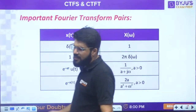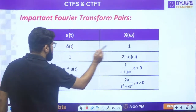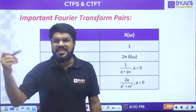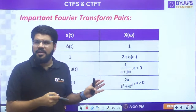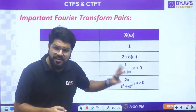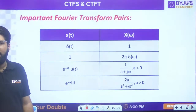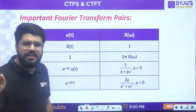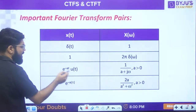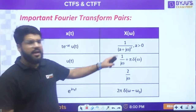Important Fourier transform pairs: δ(t) has FT = 1; constant 1 has FT = 2πδ(ω). e^(-at)u(t) for positive a has FT = 1/(a + jω). e^(-a|t|) has FT = 2a/(a² + ω²). t·e^(-at)u(t) is derived using the frequency differentiation property and has FT = 1/(a + jω)². u(t) has FT = 1/(jω) + πδ(ω). Signum t has FT = 2/(jω). e^(jω₀t) has FT = 2πδ(ω - ω₀).